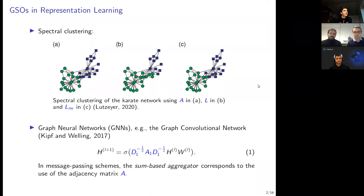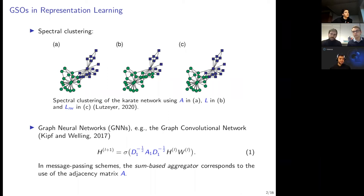This figure also provides a partial answer to a question in the chat about an example where the graph shift representation matters: the same graph represented by three different graph shift operators can yield different prediction results.